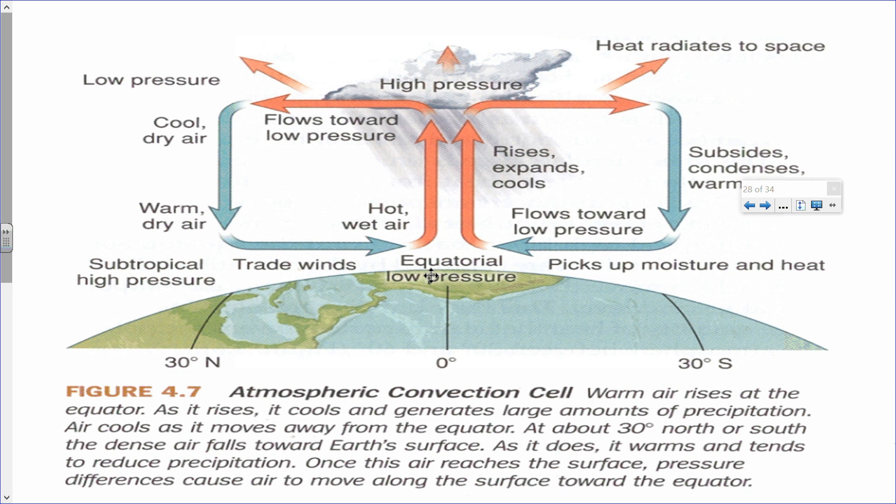As air cools, it moves away from the equator, and at about 30 degrees latitude north or south, the dense air falls towards the earth's surface. Warm air rises because it's less dense. So at the equator, where your planetary winds converge or come together and where you have the most direct sunlight, you're going to have the heating of the earth's surface.